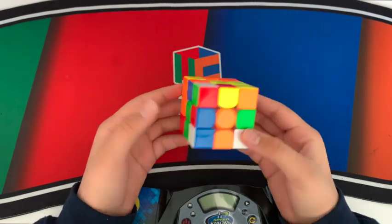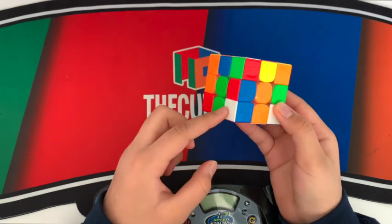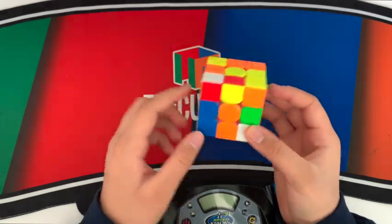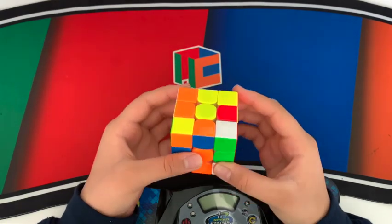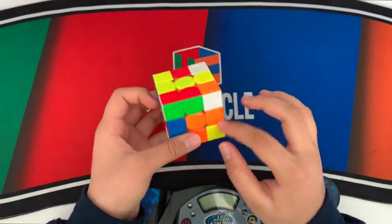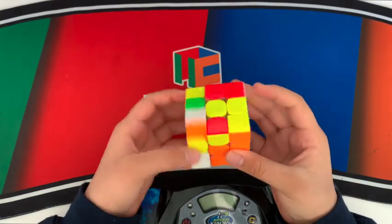So then here's the F2L that we have. First, I noticed this pair, but instead of going for it straight away, I noticed that this pair was way easier. So I did a U' to line it up, and then I did this F2L trick to take it out of the slot, and I insert it into the back.